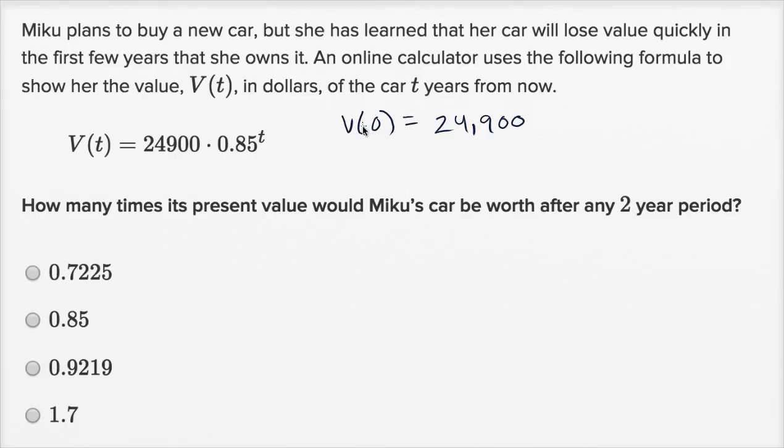And before we even calculate, so one way you could say is after a two-year period, after one year I'm going to retain 85% of my value, and then after another year I'm gonna retain 85% of that. And we could calculate what this is, but before we even do that, let's look at the choices.